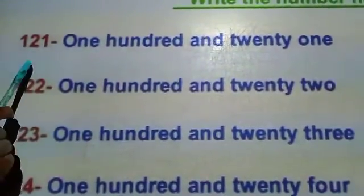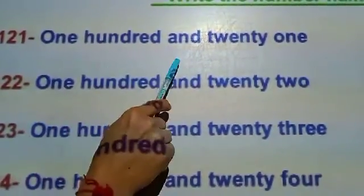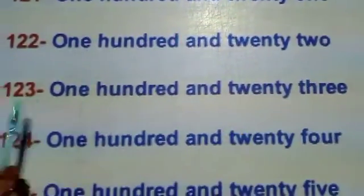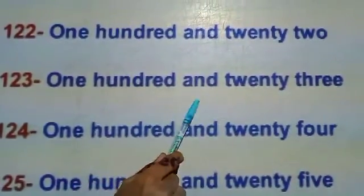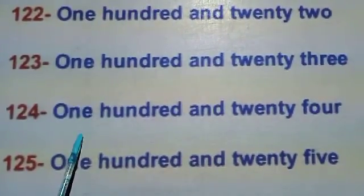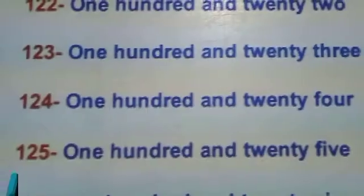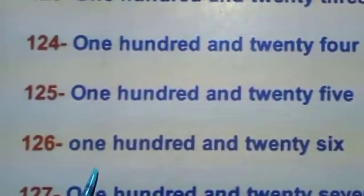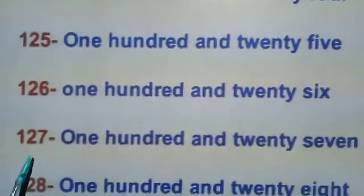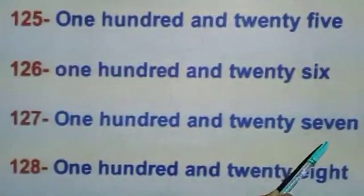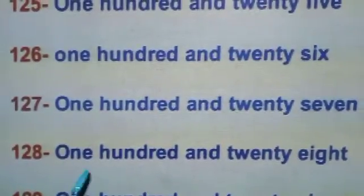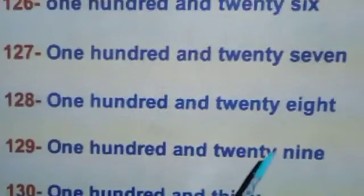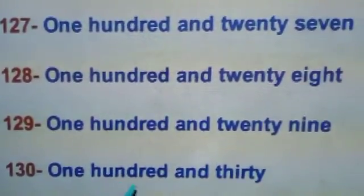Now next number. One two one — one hundred and twenty-one. One two two — one hundred and twenty-two. One two three — one hundred and twenty-three. One two four — one hundred and twenty-four. One two five — one hundred and twenty-five. One two six — one hundred and twenty-six. One two seven — one hundred and twenty-seven. One two eight — one hundred and twenty-eight. One two nine — one hundred and twenty-nine. One three zero — one hundred and thirty.